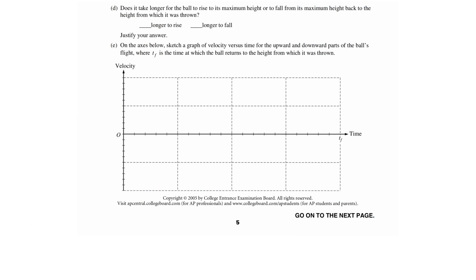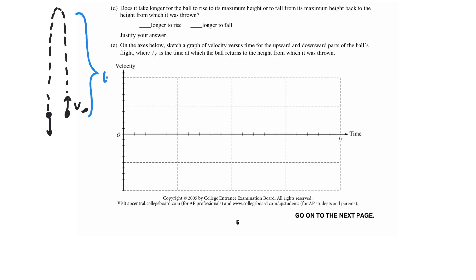Part D asks whether it takes longer for the ball to rise to its maximum height or to fall from its maximum height back to the height from which it was thrown. The ball starts, is thrown up with initial speed V0, goes up, and comes back down. Comparing time going up to time going down, using conservation of energy, the time on the way down is longer than the time on the way up. So it takes longer to fall.